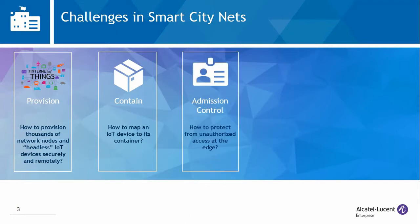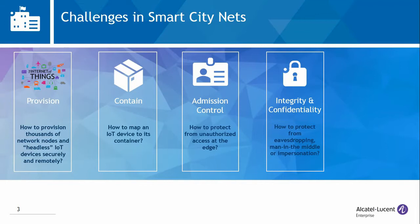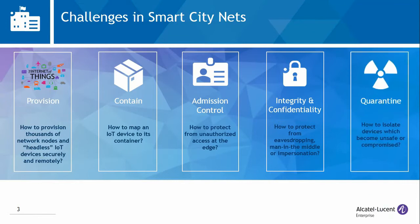Third, how to protect from unauthorized access at the network edge. In a Smart City Network, the network edge could be a cabinet on the side of the road, where physical security is not always easy to enforce. Fourth, how to protect from malicious attacks such as eavesdropping, man-in-the-middle or impersonation attacks. And fifth, how to isolate devices which become compromised or unsafe.